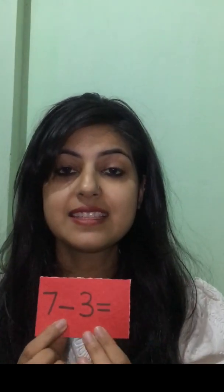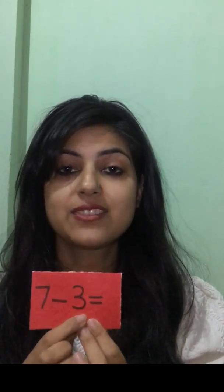Just remember that in subtraction, we have to do backward counting. So 7 in our mind and 3 on our fingers — 7, 6, 5, and 4. So what will be the answer? 7 minus 3 is equal to 4.